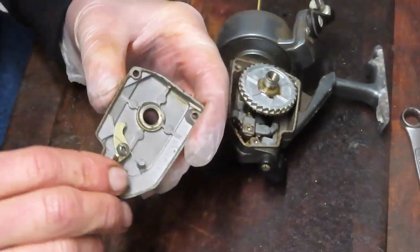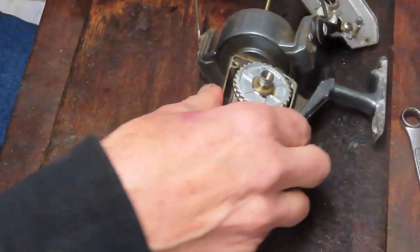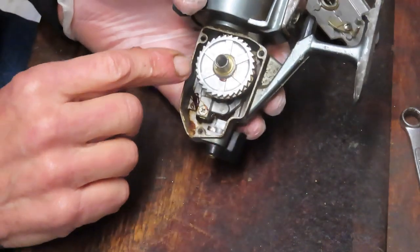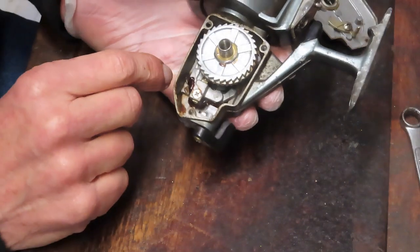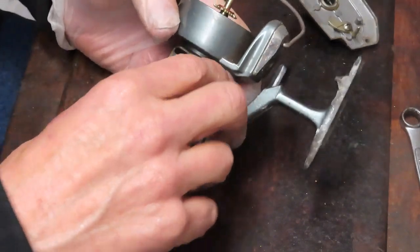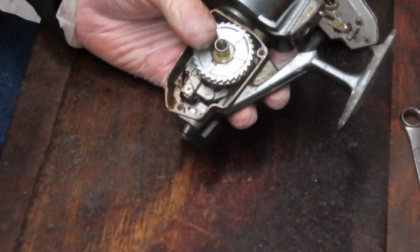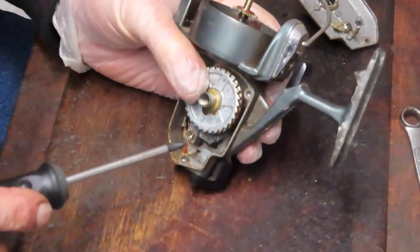I'm going to take that off. This has the slot for that anti-reverse dog on the outside of the main gear. Let's see if we can get the main gear out without... nope, I didn't think so. We want to remove our axle shaft next so that we can remove the main gear.